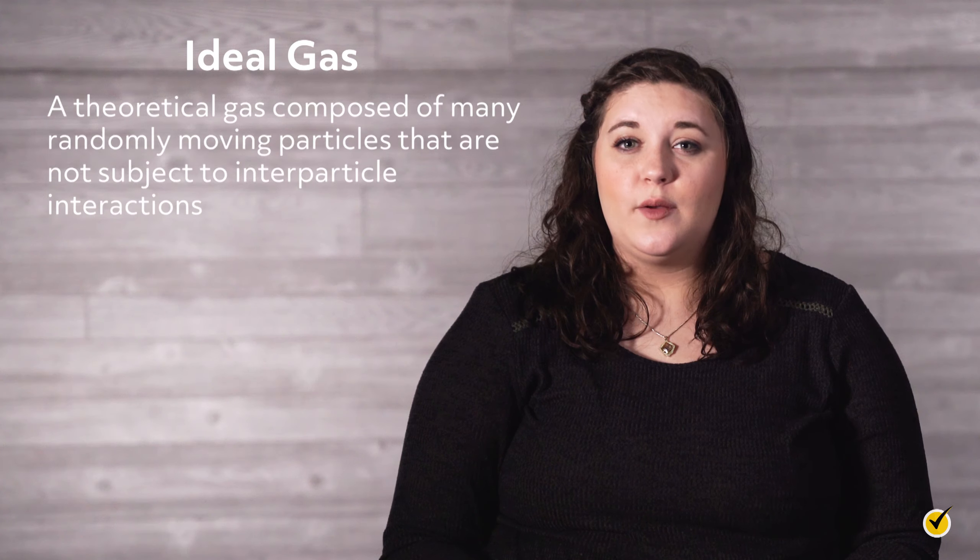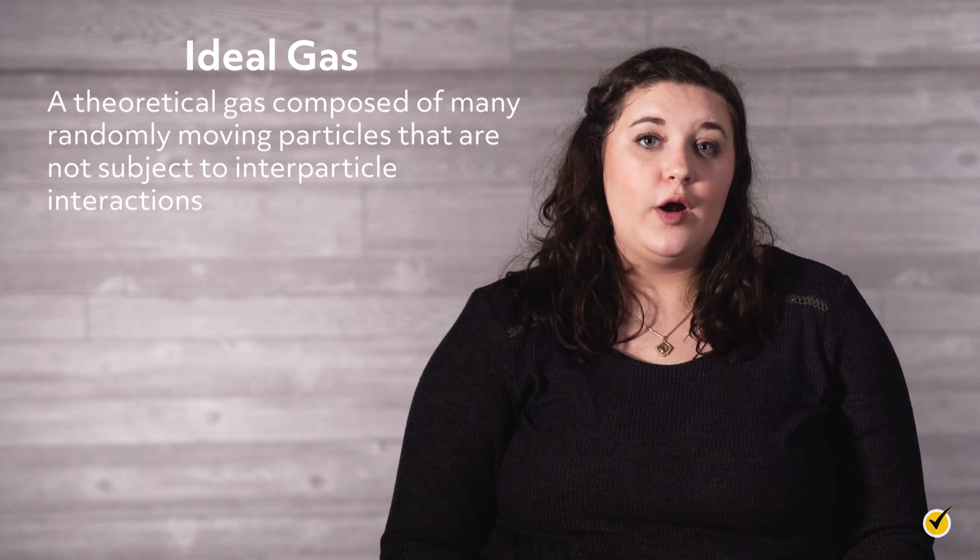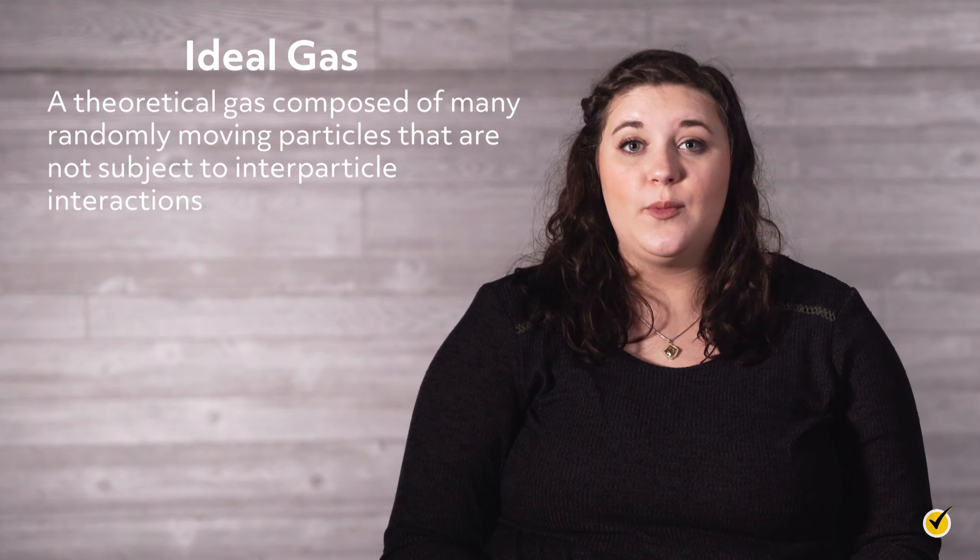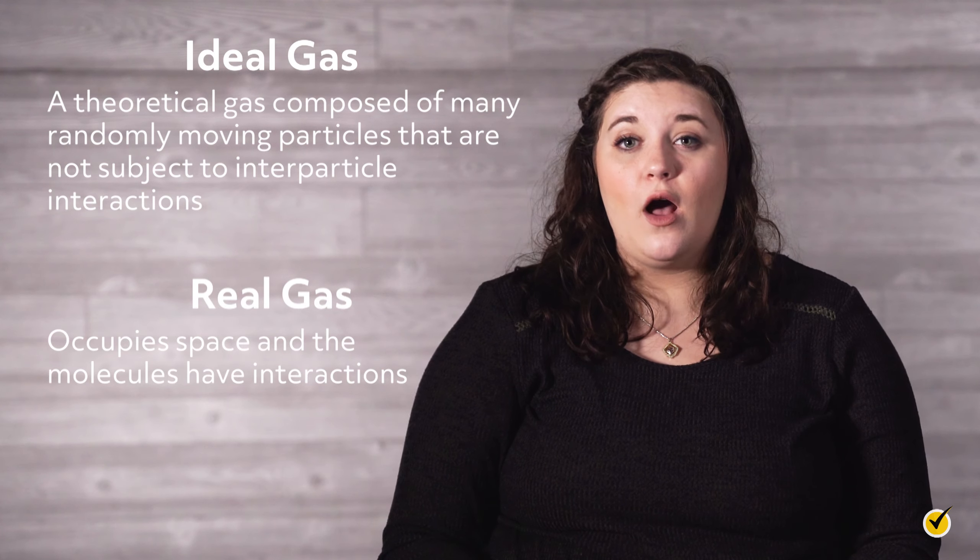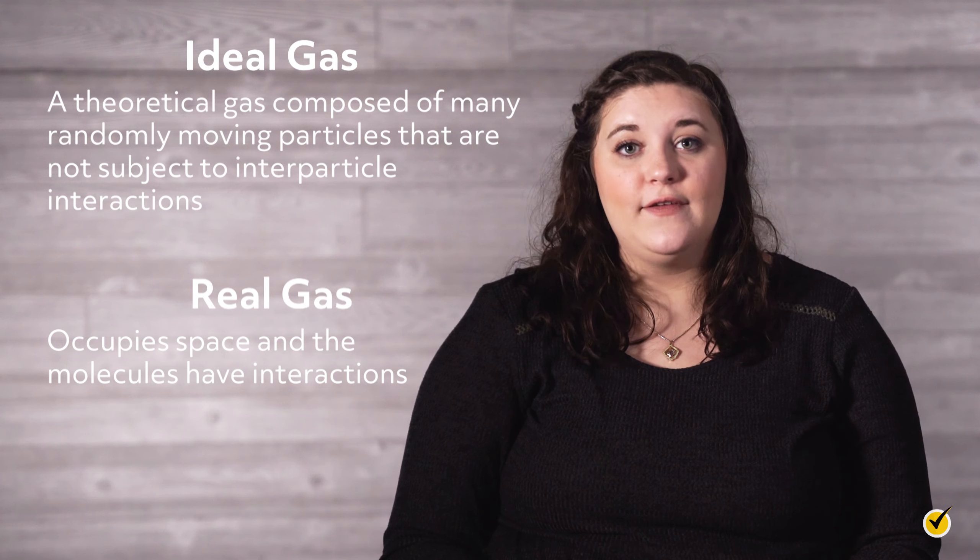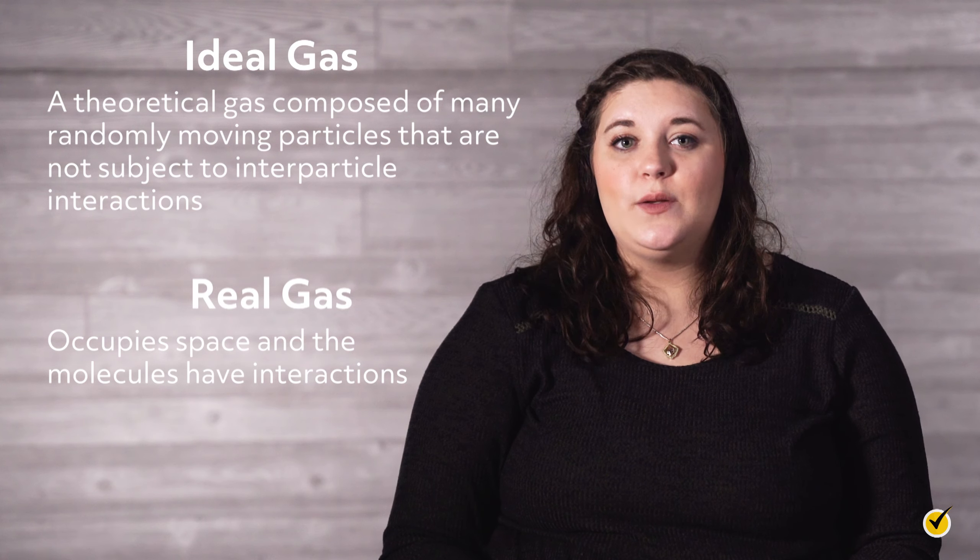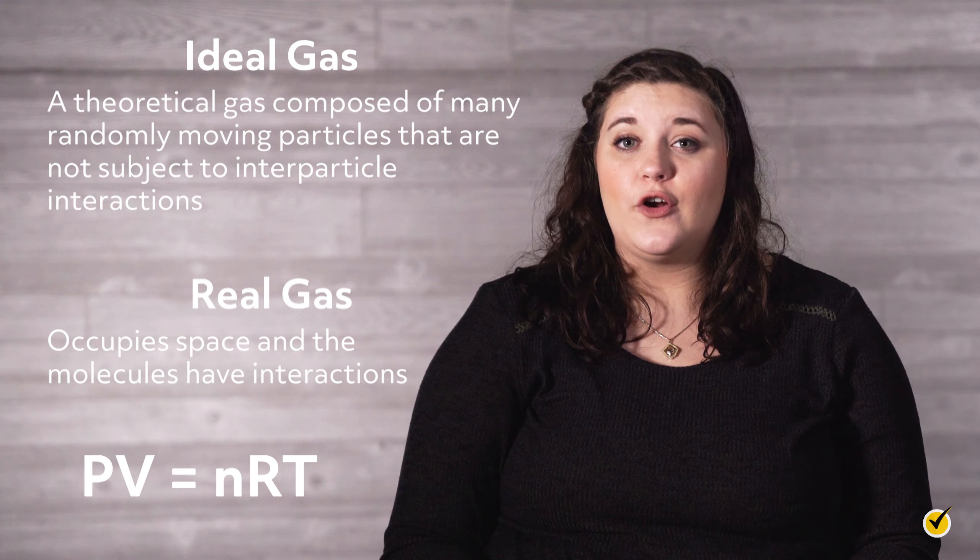Alright, let's quickly review everything we've discussed. An ideal gas is a theoretical gas composed of many randomly moving particles that are not subject to inter particle interactions. A real gas is simply the opposite. It occupies space and the molecules have interactions. This results in PV always equaling NRT.